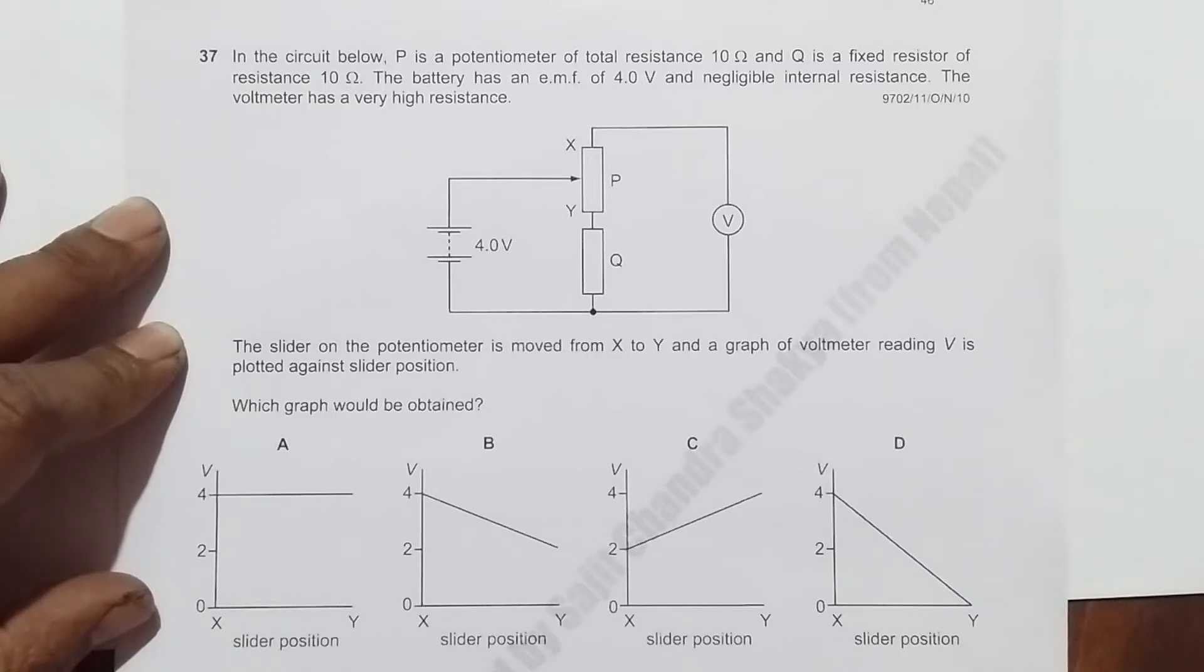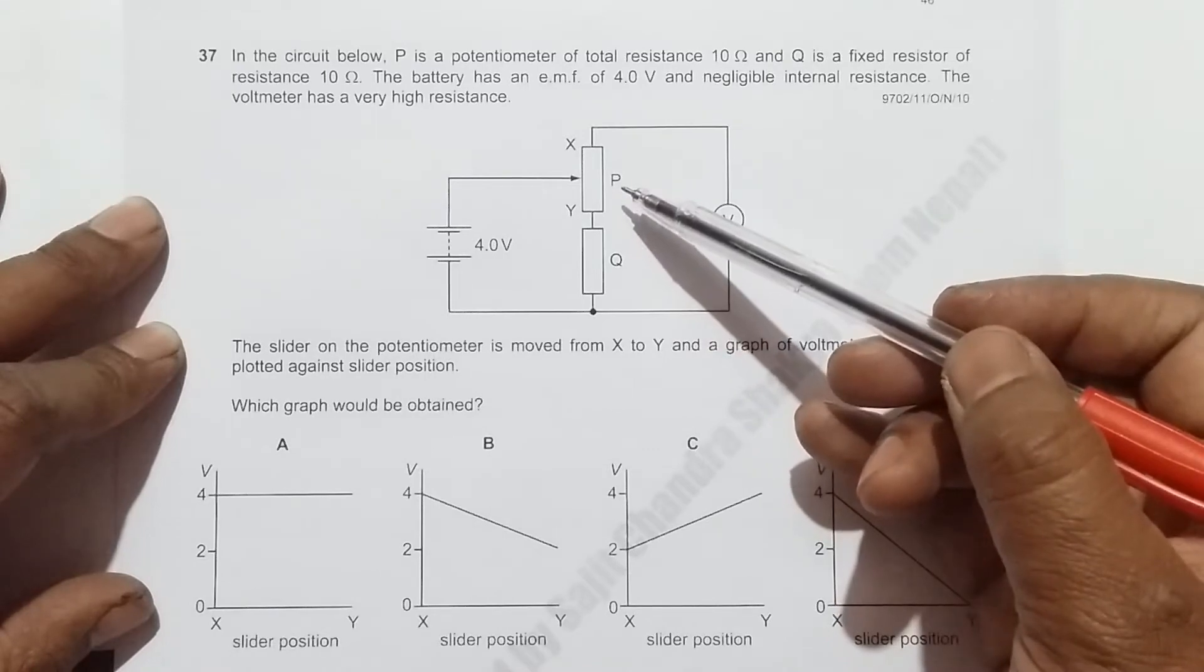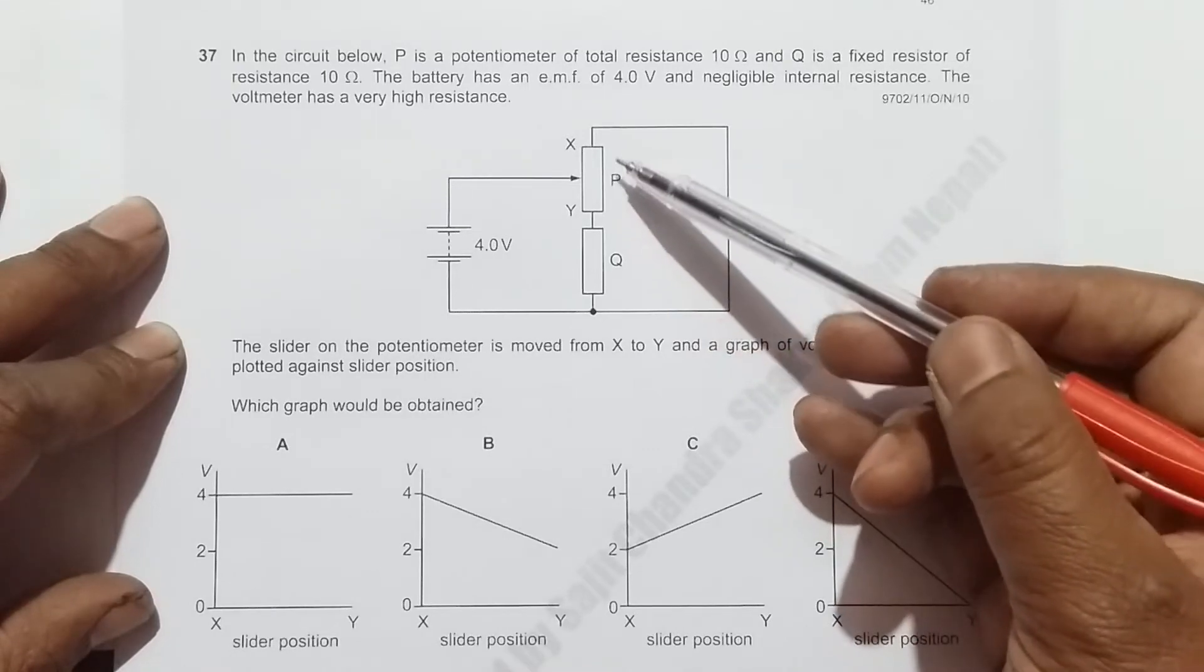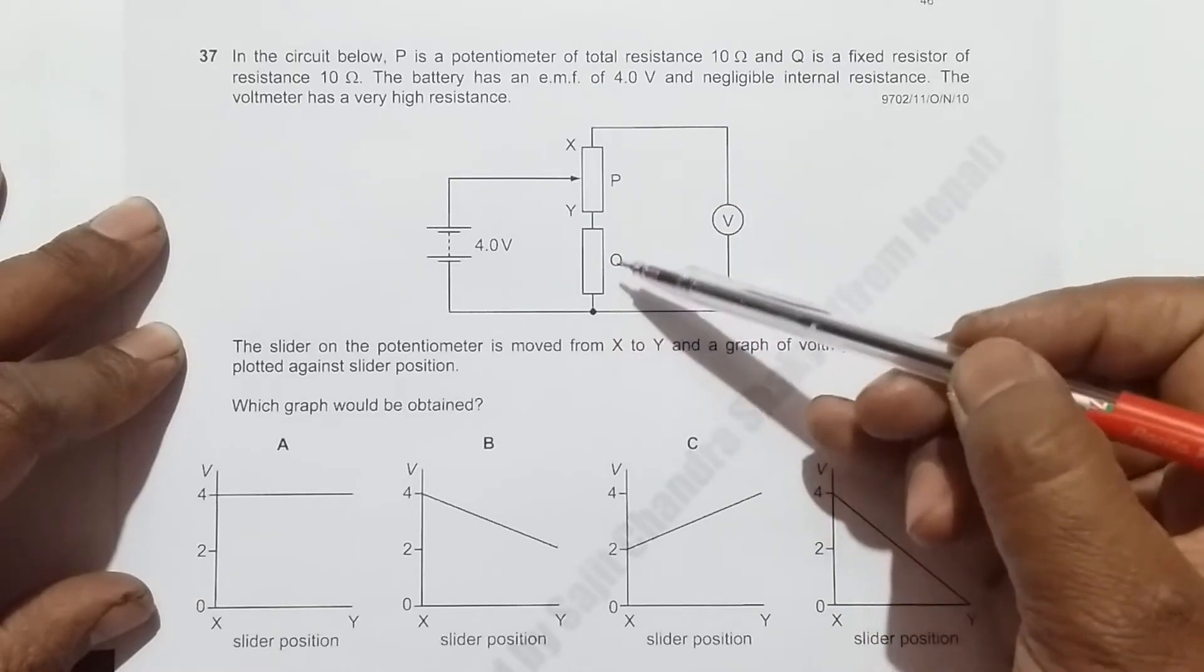This is question 37 from the 2010 October-November Paper 11. In this circuit, P is a potentiometer of total resistance 10 ohms, and Q is a fixed resistor of resistance 10 ohms.